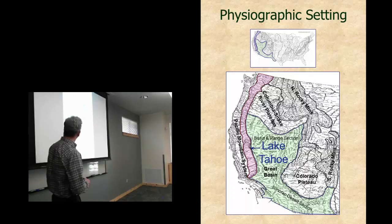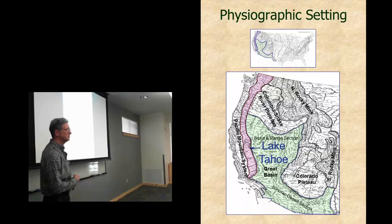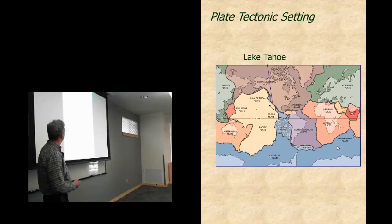So where are we? Well, here we are. This is a physiographic map of the United States. And you see Lake Tahoe is right on the edge of the Great Basin. This part is the Basin Range section and the Pacific Mountain system. So we're sitting right about there. Interesting place to be.